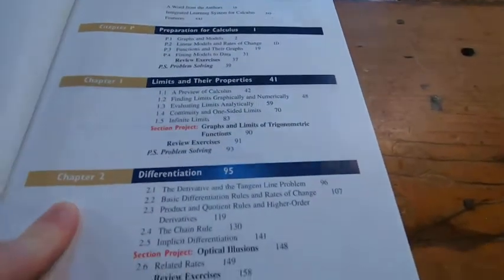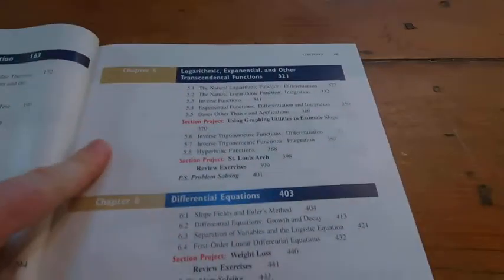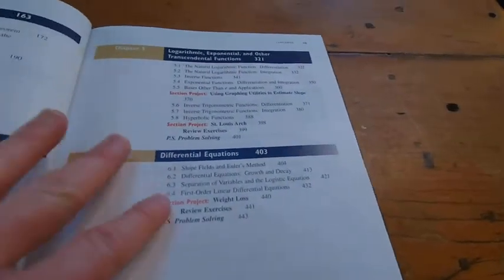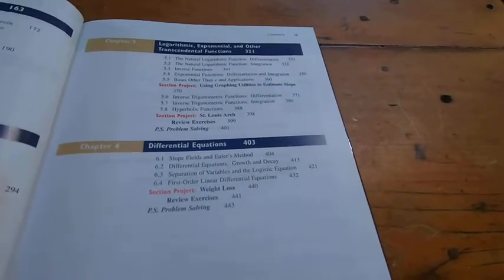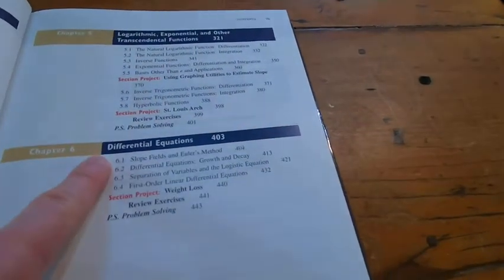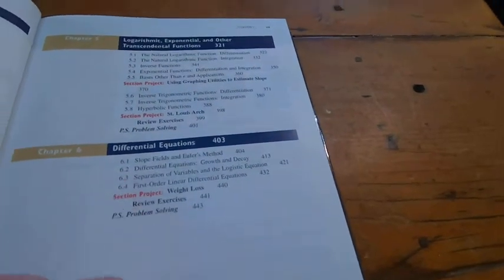So this has Chapter 1, Chapter 2, Chapter 3, Chapter 4, Chapter 5, and then Chapter 6. In my Calc 1 class, I cover most of Chapter 1, 2, 3, 4, and then some of Chapter 5, I'd say over half of it, and then maybe 6.2 in Chapter 6. So it's mainly Calculus 1.